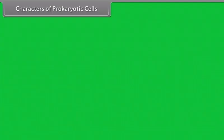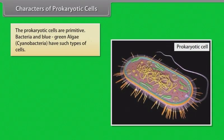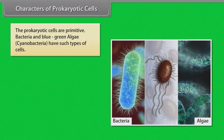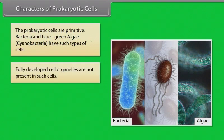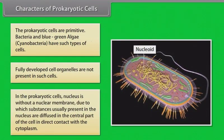Characters of prokaryotic cells: The prokaryotic cells are primitive. Bacteria and blue-green algae, i.e., cyanobacteria, have such types of cells. Fully developed cell organelles are not present in such cells. In prokaryotic cells, the nucleus is without a nuclear membrane, due to which substances usually present in the nucleus are diffused in the central part of the cell, in direct contact with the cytoplasm.